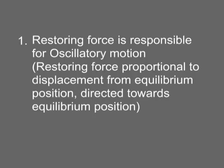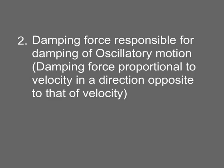When a body oscillates with an external periodic force, three forces are acting on the body. First, the restoring force is responsible for oscillatory motion — it is proportional to the displacement from the equilibrium position and directed towards the equilibrium position. We get F₁ = −kx. Second, the damping force is responsible for damping of oscillatory motion — it is proportional to velocity and opposite in direction to velocity. We get F₂ = −r(dx/dt).